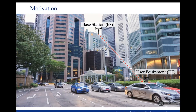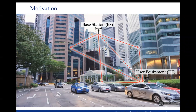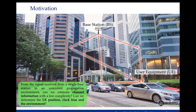This is a picture from downtown Singapore. Let's suppose we have a base station with many antennas on the top of this building, and there is a user equipment here, also with many antennas. This is a signal sent from the base station to the user. The signals can go over complex propagation environments — they can bounce off objects and generate multipaths. The question we want to answer is: can we estimate the channel information with relatively low complexity? Can a user determine its position, synchronize with the base station, and perhaps find additional information like its orientation? Can we also provide light maps of the environment using that channel information?